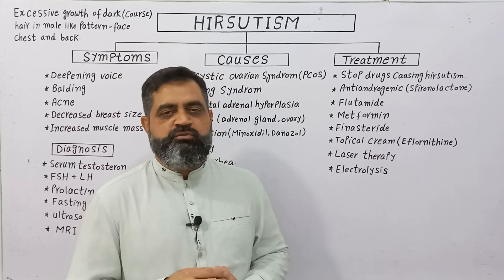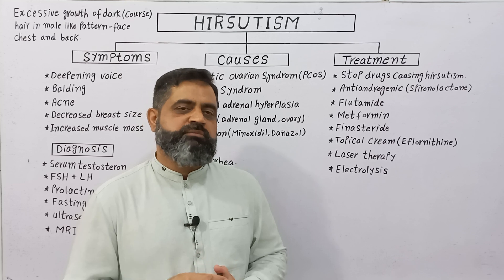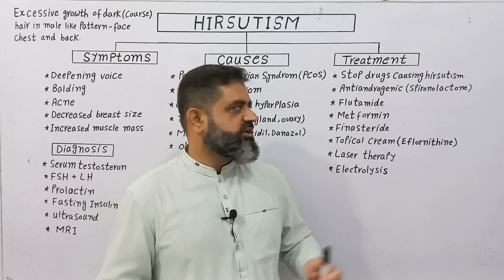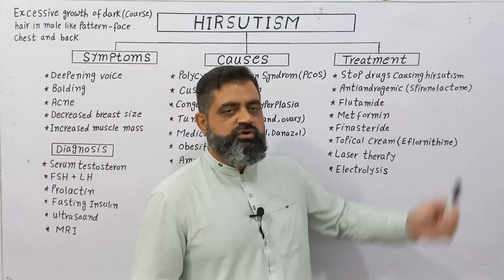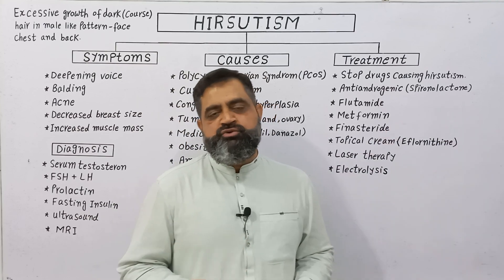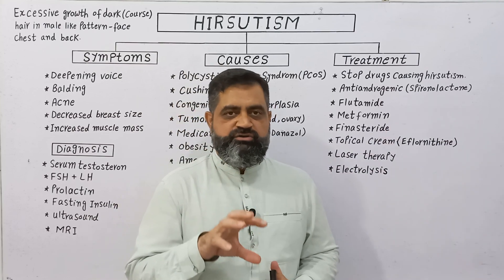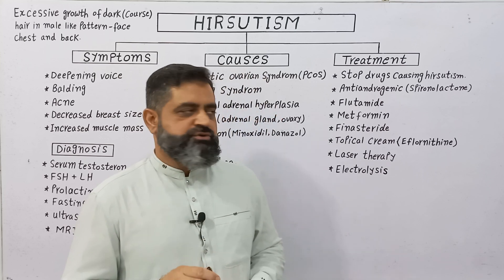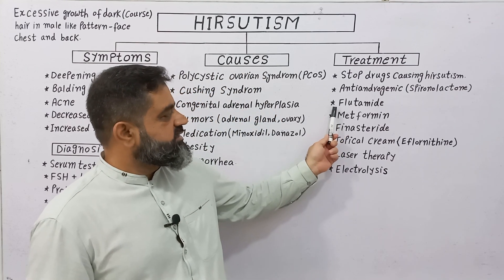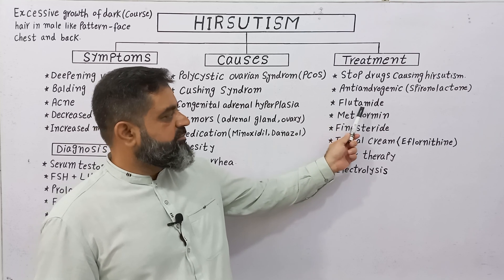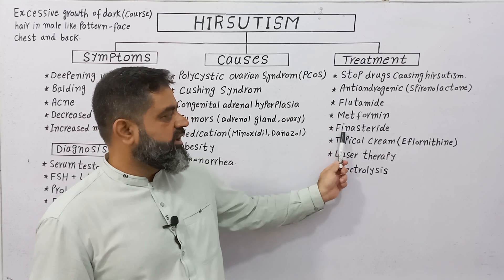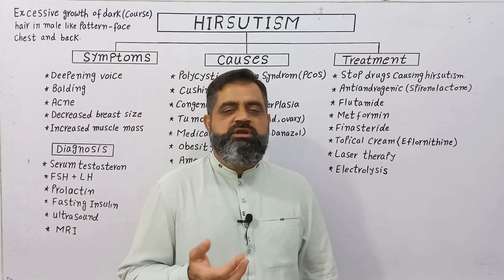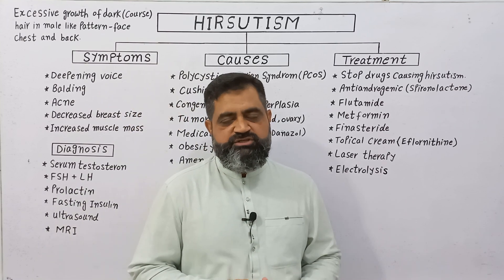Anti-androgenic medications can neutralize the effect of androgen hormones — male hormones — produced inside the female body. Too much of these male hormones can lead to hirsutism. Medications like spironolactone can be used to neutralize the effect of androgen and ultimately reduce hirsutism.